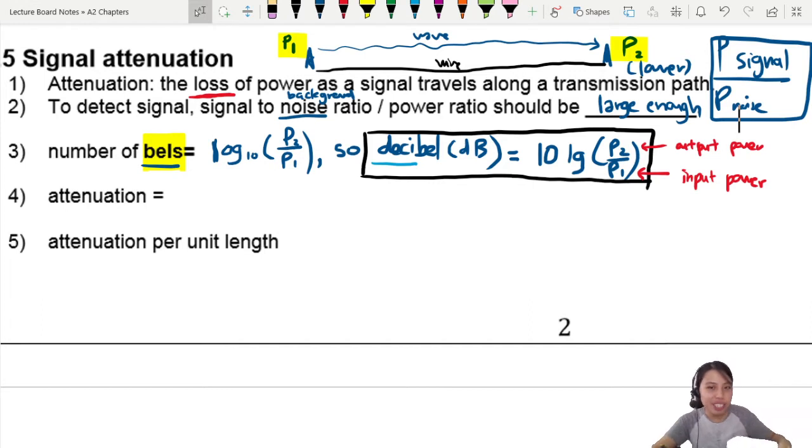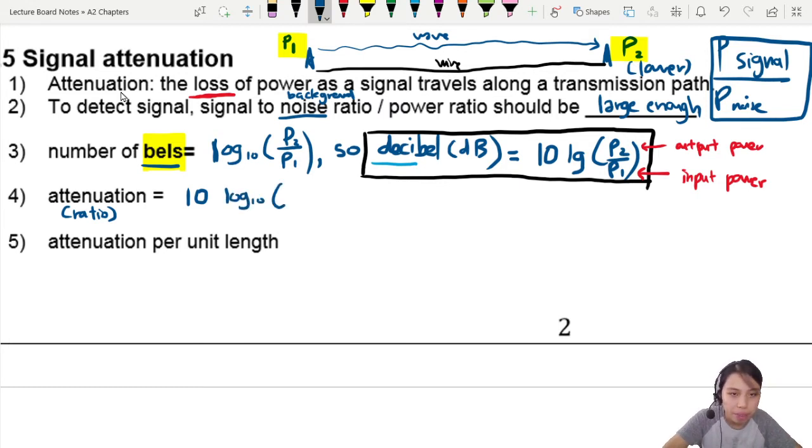Now conveniently, attenuation also uses the same equation. So when we talk about attenuation, basically we're saying from P1 to P2, two positions, what's the change in power? We take a ratio, log, times 10. So attenuation here is also going to be 10 log 10, P2 over P1. Same equation. Attenuation in decibels.